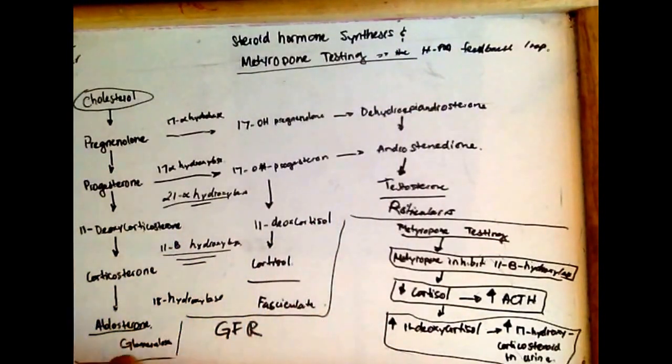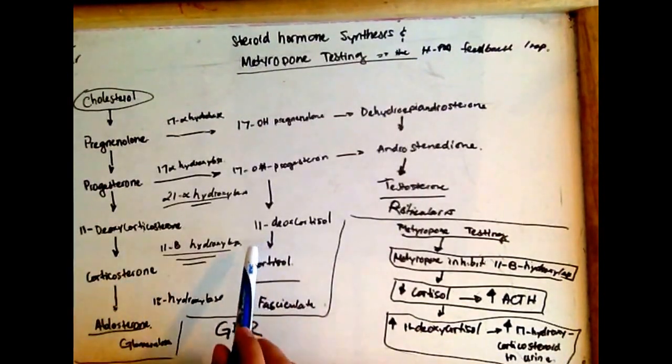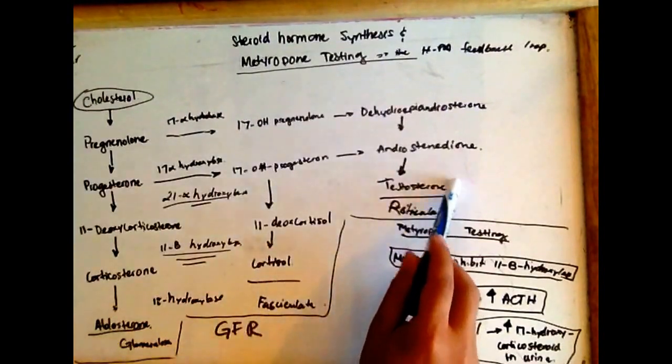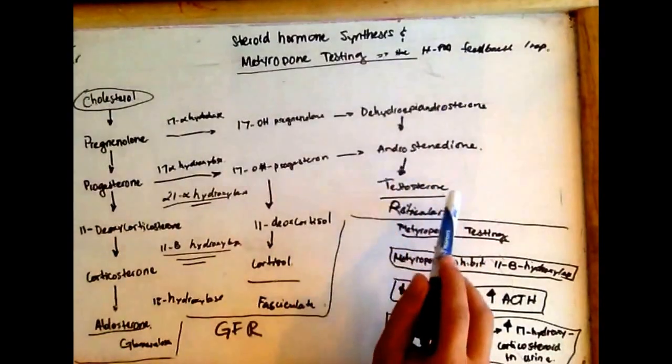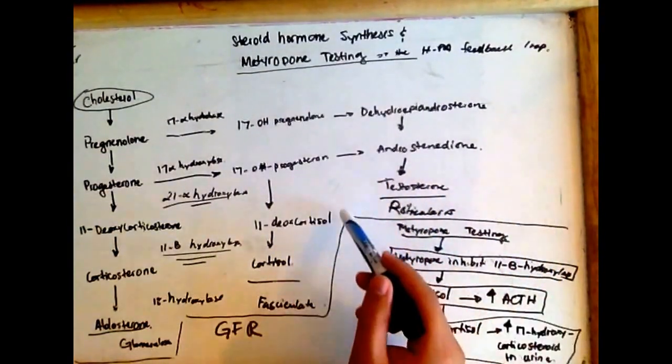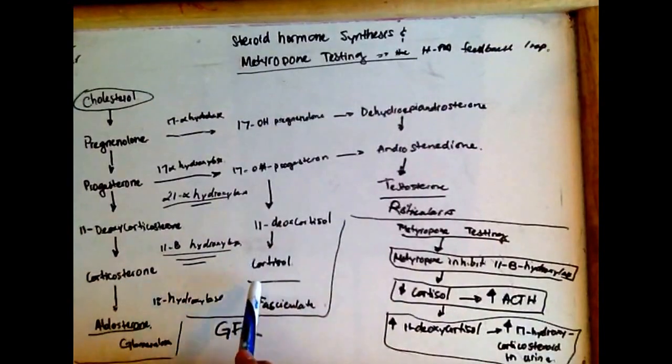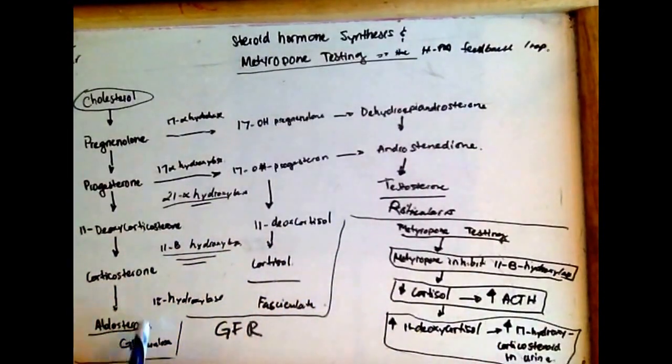Corticosterone is converted into aldosterone. Aldosterone's function is to reabsorb sodium from the kidney. The first layer glomerulosa relates to salt, the second fasciculata to sugar, and the third reticularis has to do with sex steroid hormones and testosterone production. Cortisol is sugar, and aldosterone is salt.